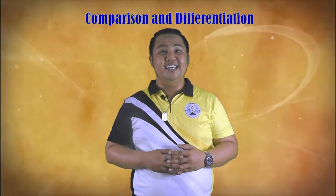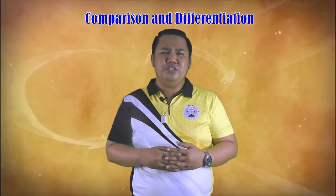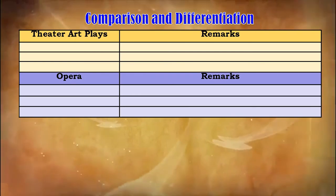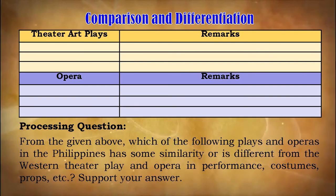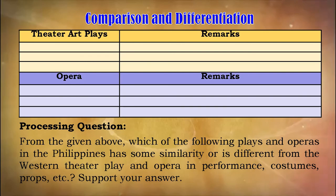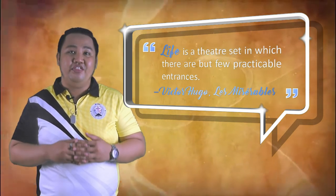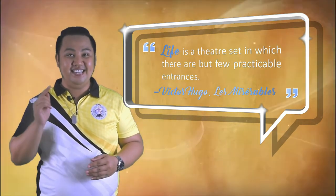For your assignment, entitled Comparison and Differentiation, list down some famous plays and operas in the Philippines that you think have Western theater art influence. Write some remarks on the given plays or operas. Answer the questions below: from the given above, which of the following plays and operas in the Philippines has some similarity or is different from the Western theater play and opera in performance, costumes, props, etc.? Support your answer. Once again, this is Sir Harold, your arts teacher, leaving you with Victor Hugo's quote from Les Miserables: 'Life is a theater set in which there are but few practicable entrances.' Keep safe, everyone, and see you on our next live streaming session.